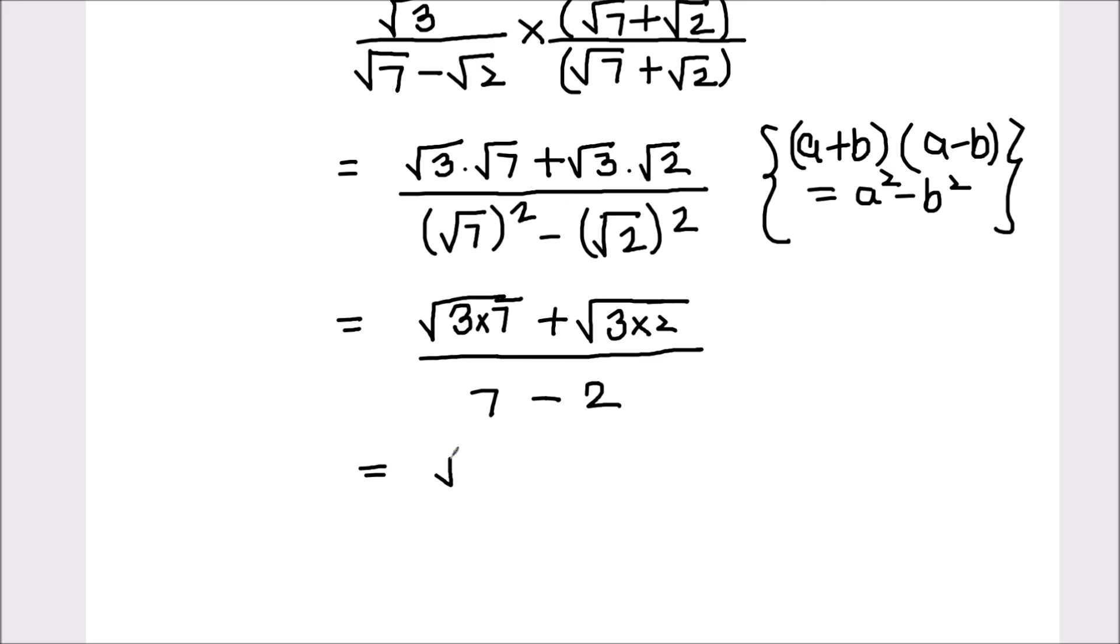So this is going to be root of 21 plus root 6 divided by 7 minus 2 is 5. So this is how we rationalize the denominator. Here we see there is no radical term in the denominator.